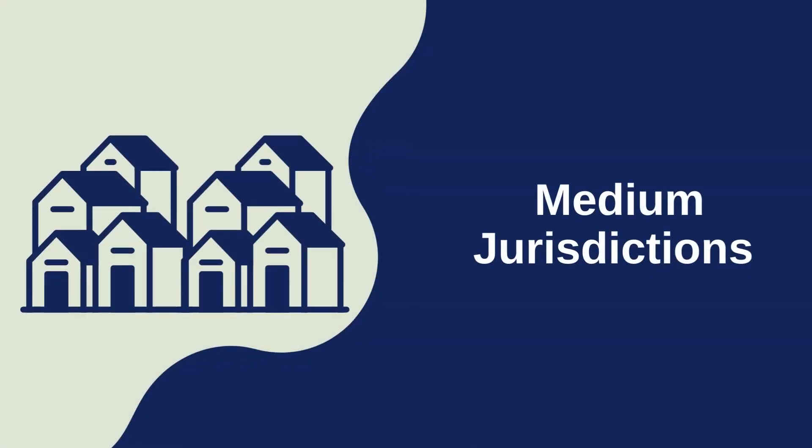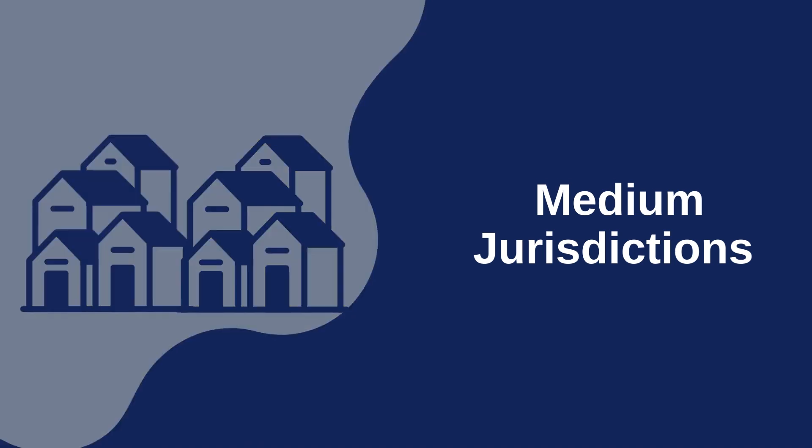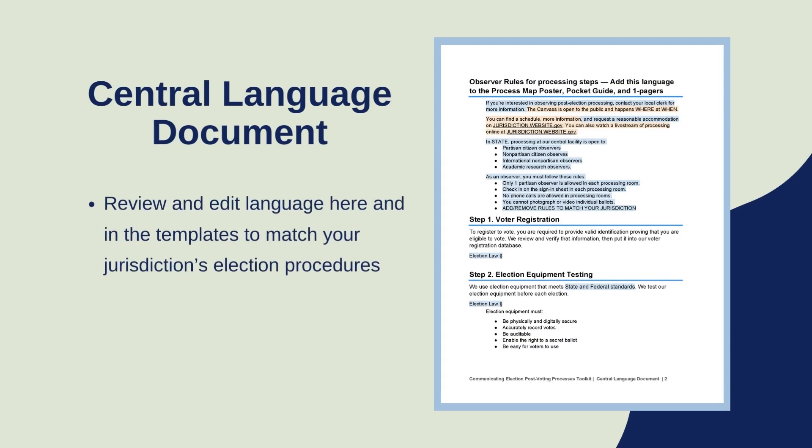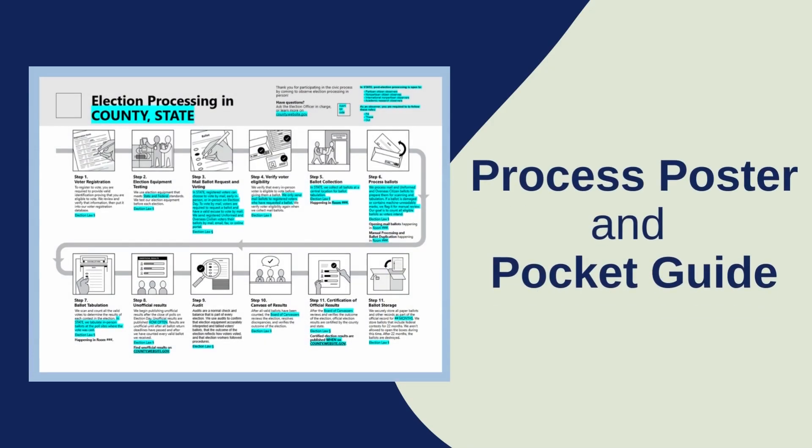Example B: Medium-Sized Jurisdictions. Medium-sized jurisdictions might have a little more space than smaller jurisdictions and may have more capacity to print in color in-house. These jurisdictions can edit the central language document and print the process map and pocket guides.